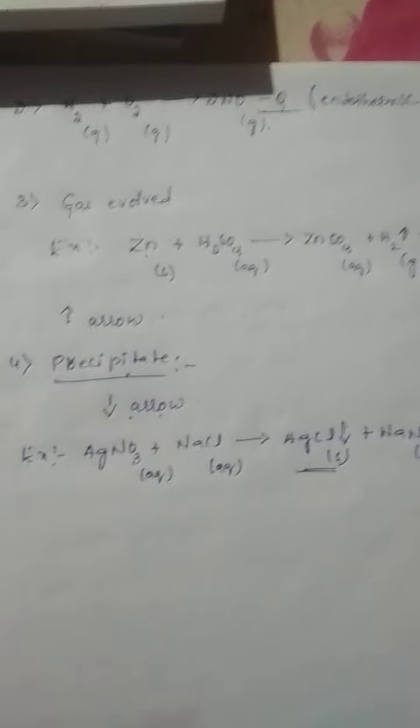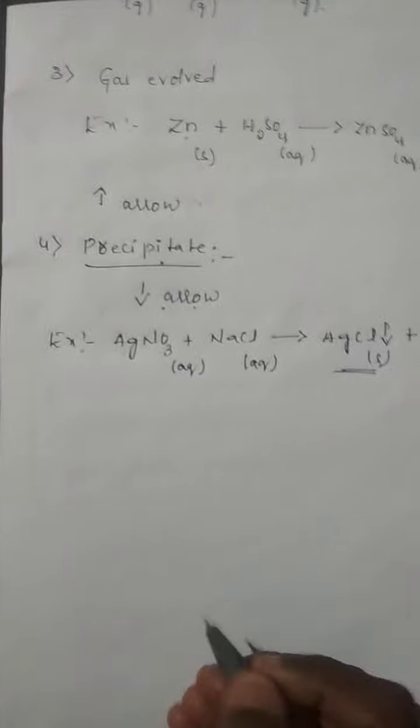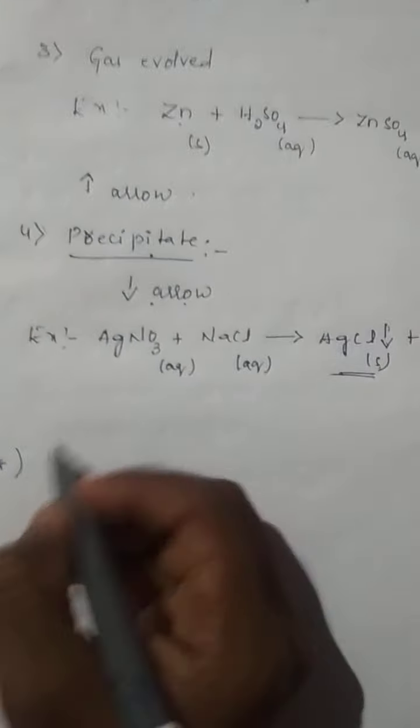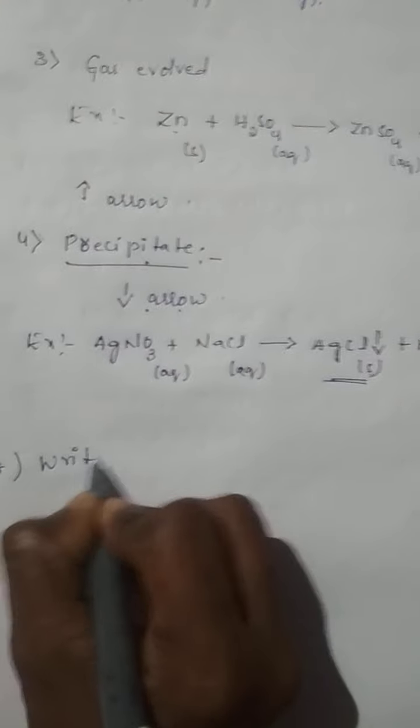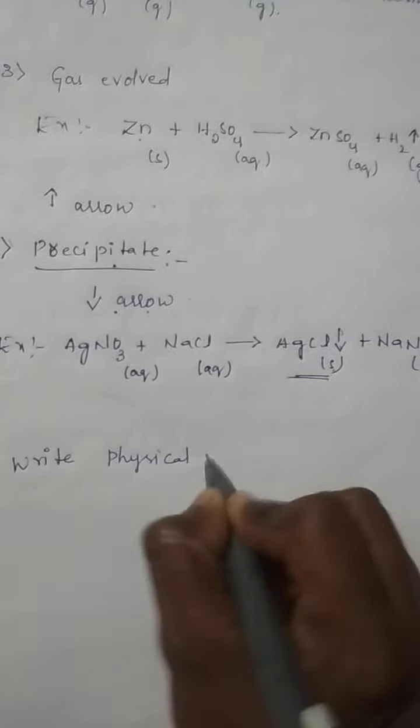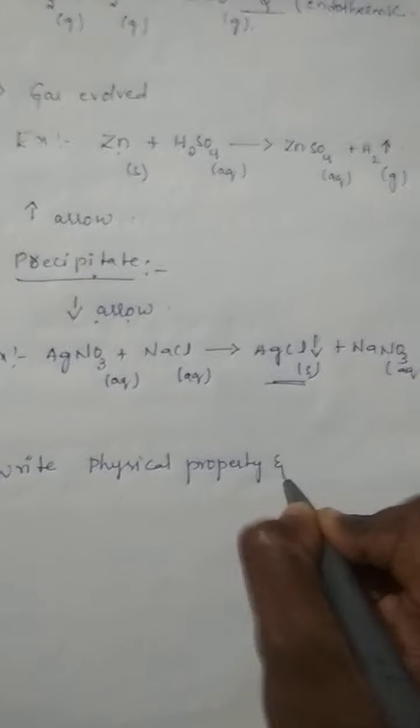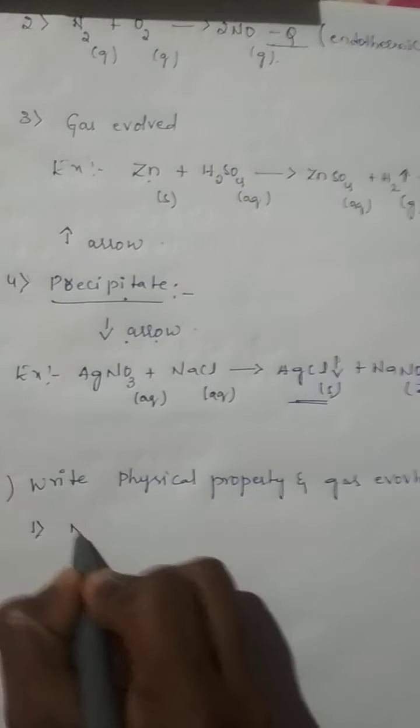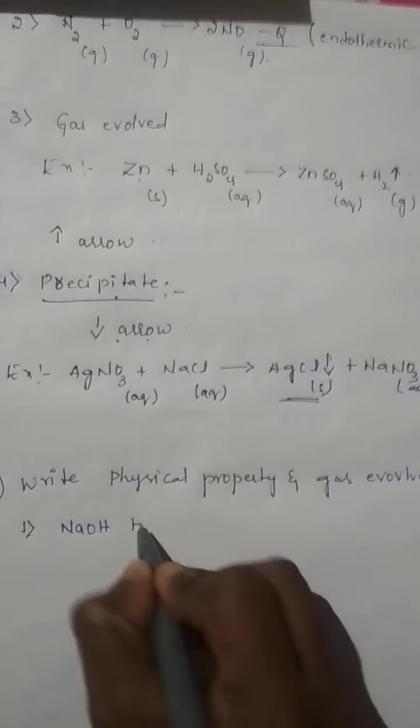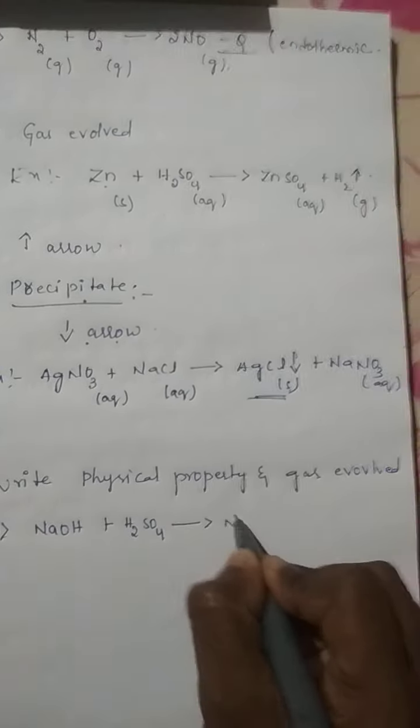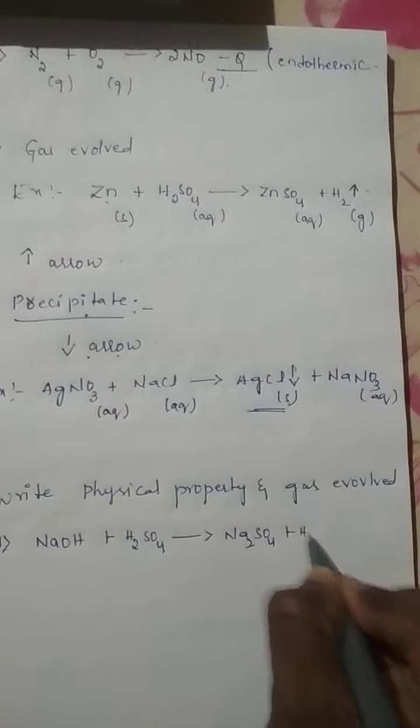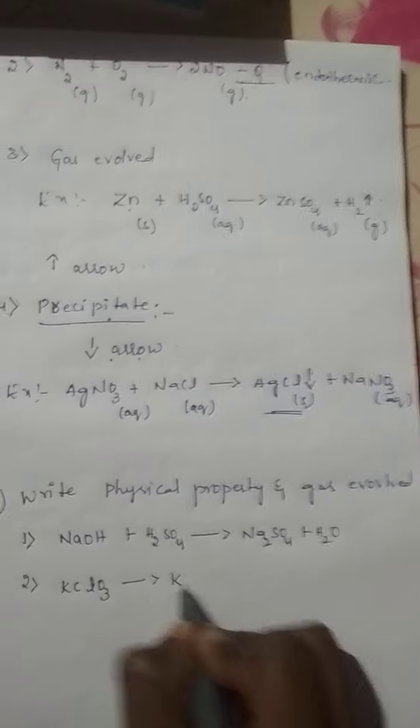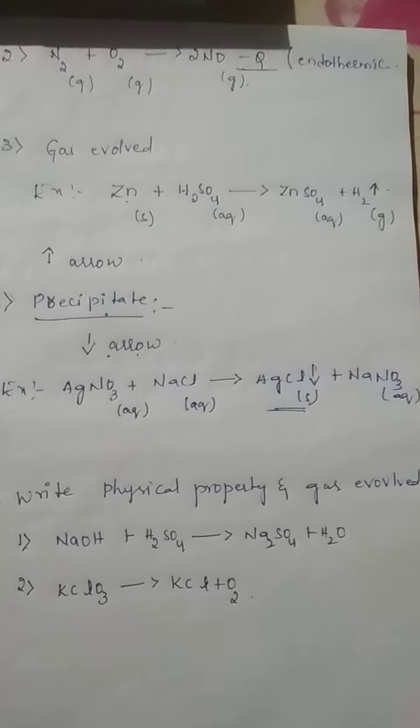Is it clear, children? I think you understood these properties. So on this basis, I want to give you some questions. Write physical property and gas evolved. First, NaOH plus H2SO4 gives rise to Na2SO4 plus H2O. Second one, KClO3 gives rise to KCl plus O2.